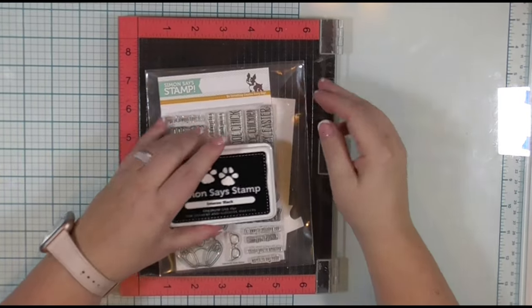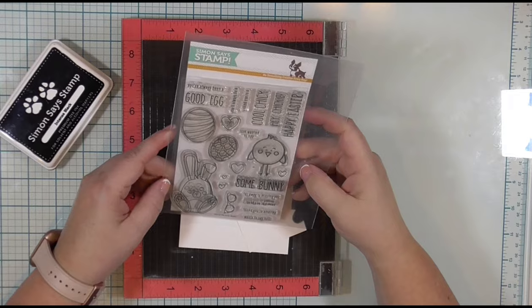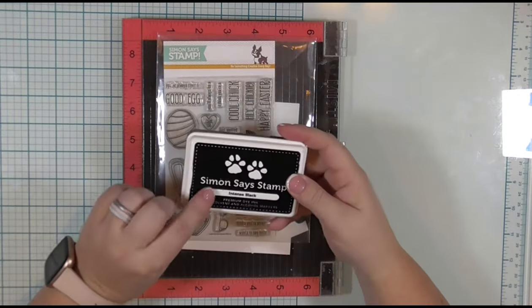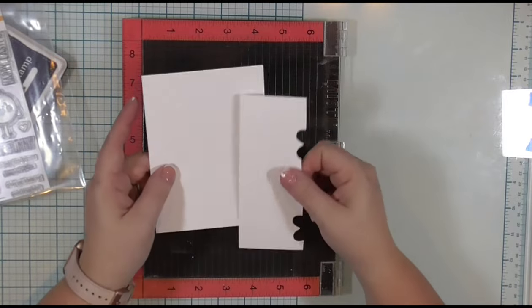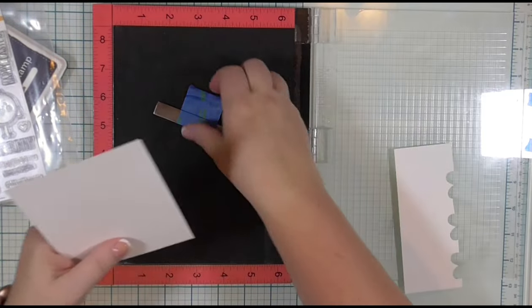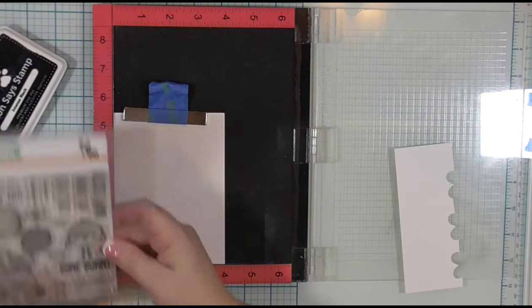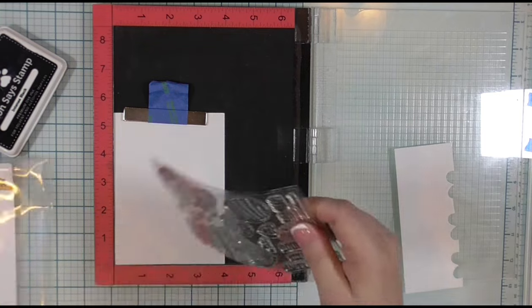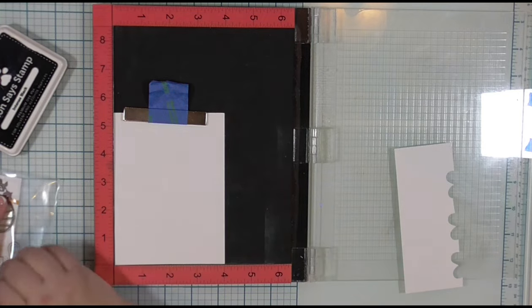I will be making an Easter card today using the Somebody Loves Me stamp set from Simon Says Stamp. I will be stamping the images in Simon Says Stamp Intense Black Ink because it is alcohol marker friendly, on Nina Classic Crest Solar White 80-pound cardstock. I am using the bunny, the chick, and both eggs. I will stamp the eggs multiple times.